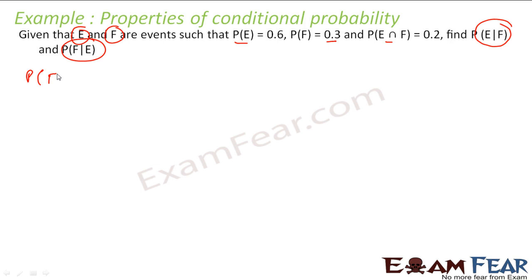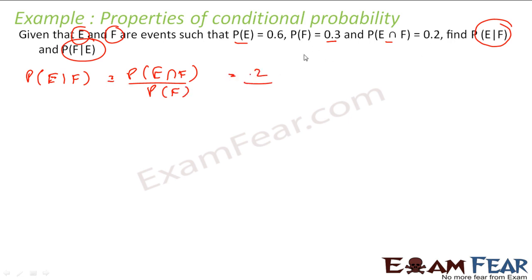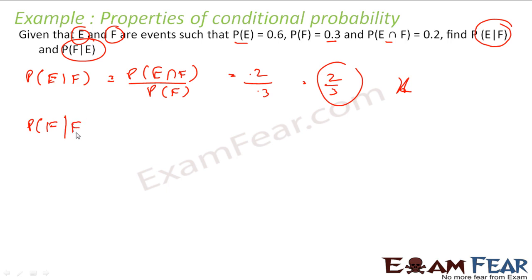Probability of E given F is nothing but probability of E intersection F divided by probability of F. Probability of E intersection F is 0.2 and probability of F is 0.3, so this gives us the result.